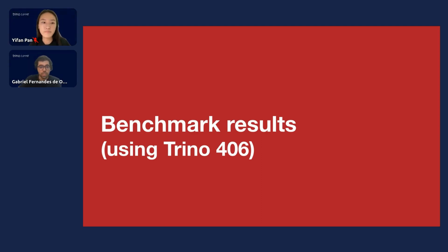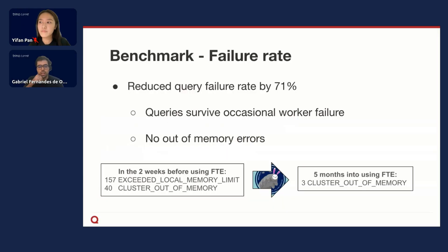Let's talk about the results we got at Quora when using FTE mode. When we started using fault tolerance mode, we got a reduction of the query failure rate by about 71%. That's because of two main reasons. First, queries can now survive any occasional worker failure. If one of the workers runs out of memory and crashes, the queries that worker was running will likely not fail. The cluster will be able to retry any failed tasks and keep running the queries as if nothing happened.